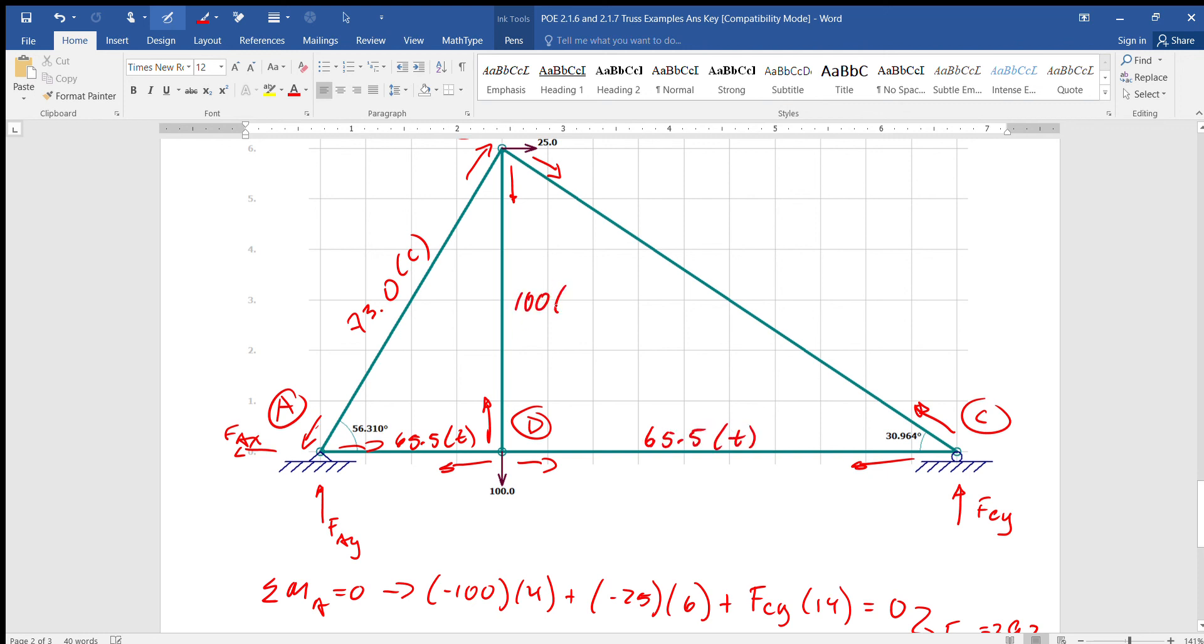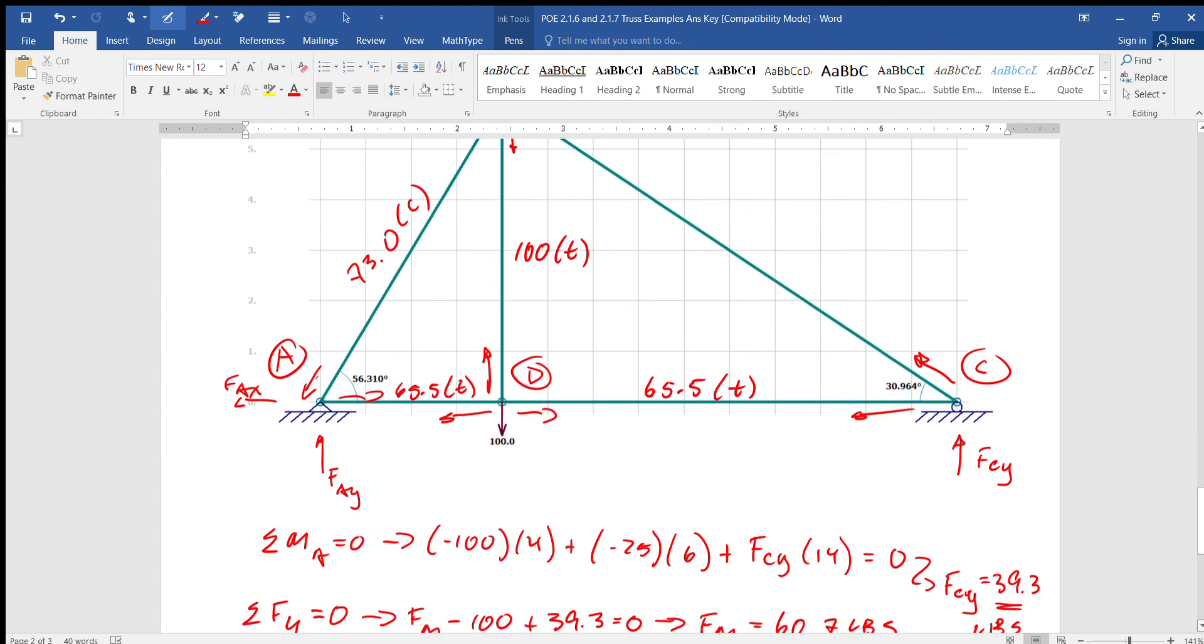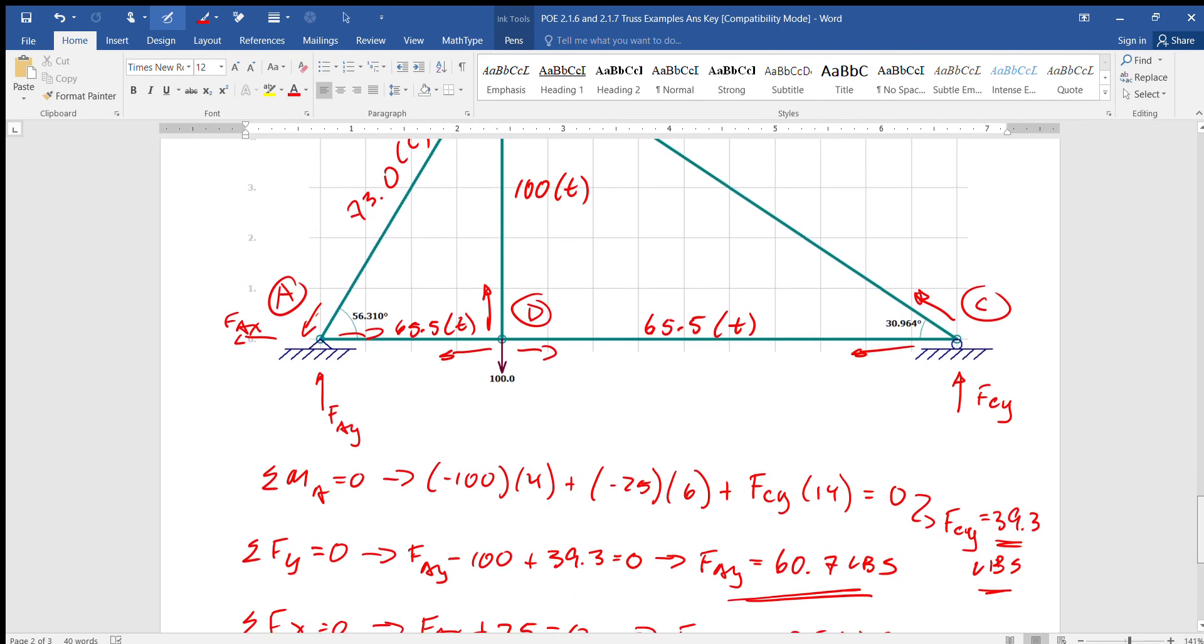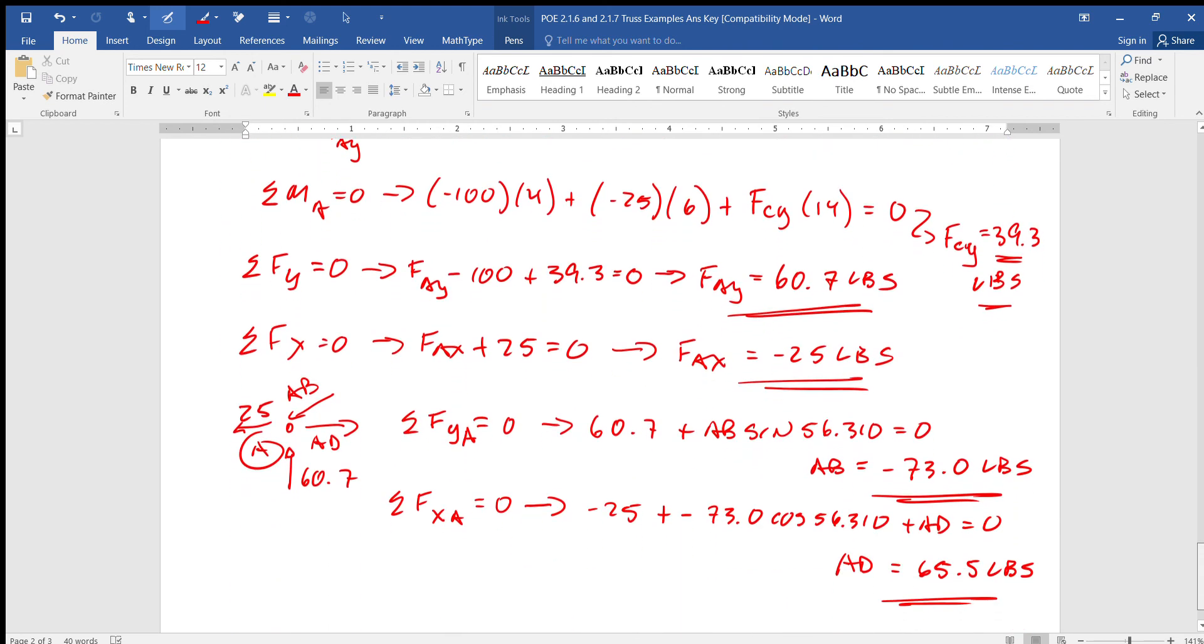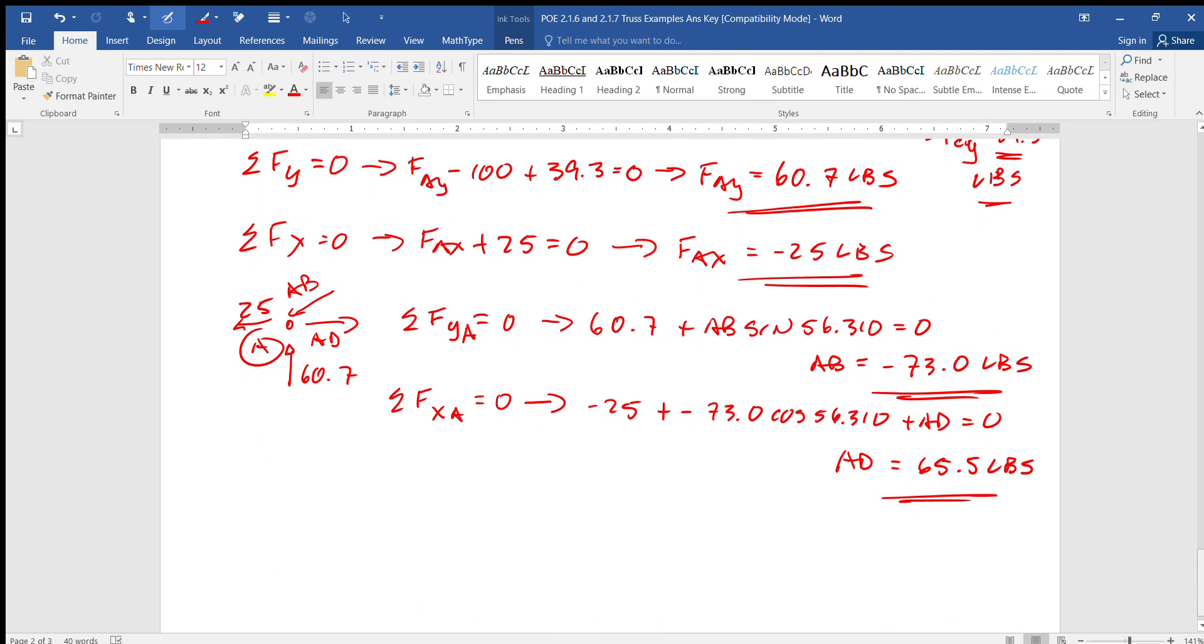And it stays the same sign, so it's tension. 65.5 tension, which means this one's 65.5 tension, this one's 100 tension, and we get down to Fcy or point C I should say. So here is point C, got that going on.